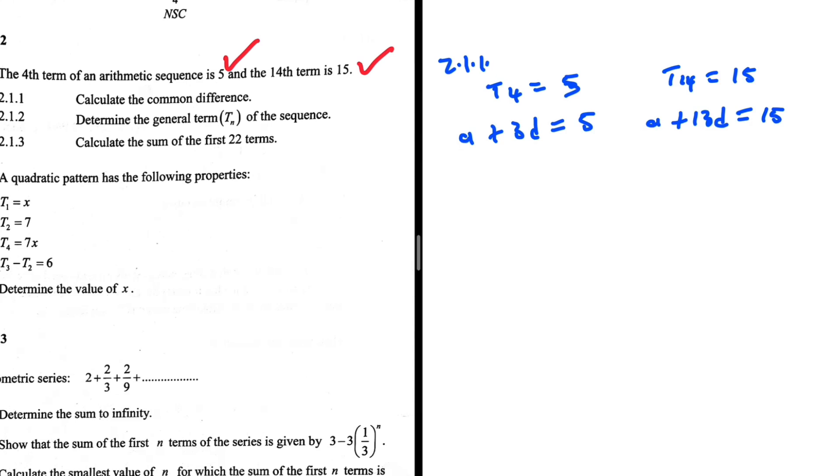We want the common difference, so what can we do? We make a the subject of the formula in this equation and make a the subject in this equation and equate the two. In doing that we're going to get a being equals to 5 minus 3d, and then on the other equation a is equals to 15 minus 13d. So we can equate these two because they are both equal to a.